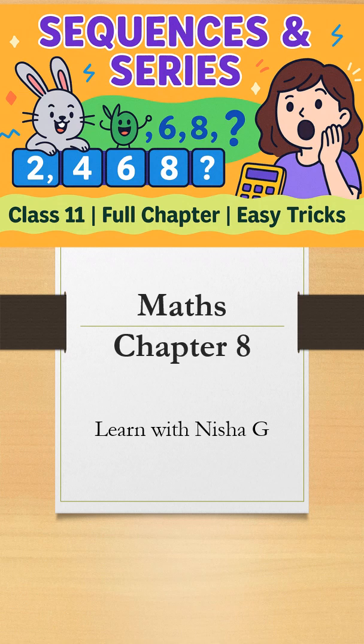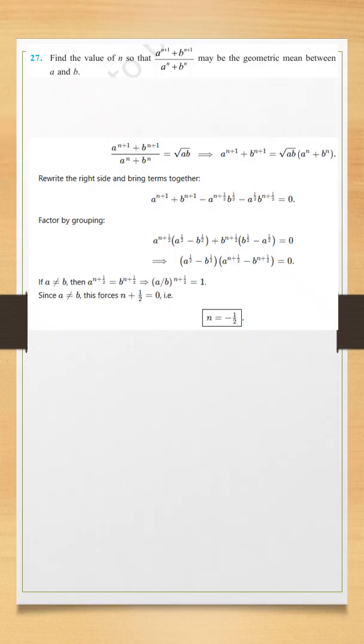So, we are studying class 11 mathematics chapter 8 sequences and series. Here comes question number 27 of exercise 8.2. In this, we have to find the value of n when this given expression is a geometric mean between a and b.